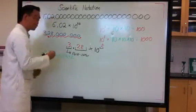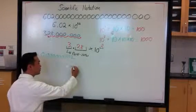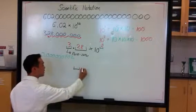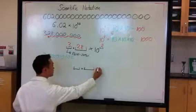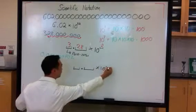So again, let's follow the format. Single digit, decimal, remainder digits, times 10 to the power of an exponent.